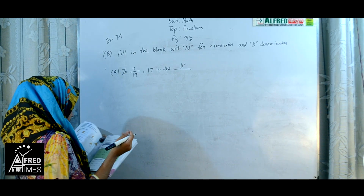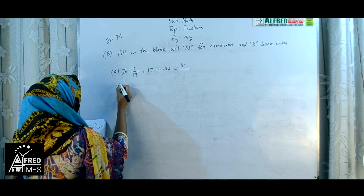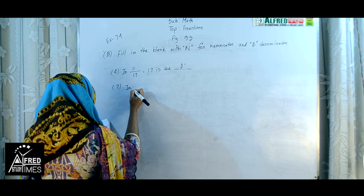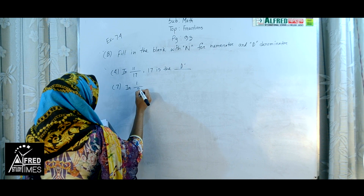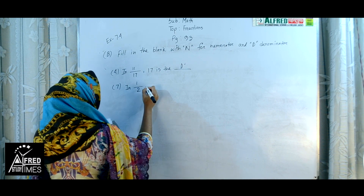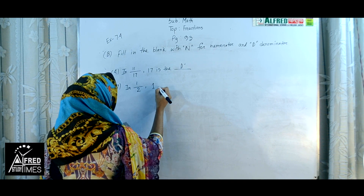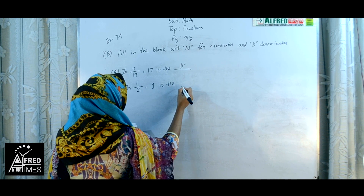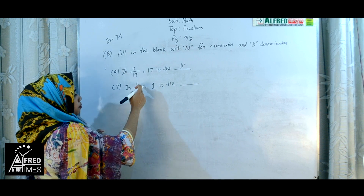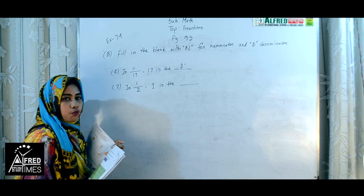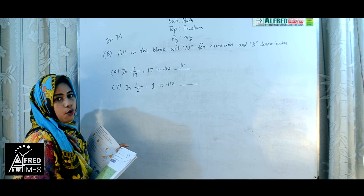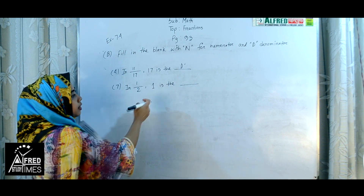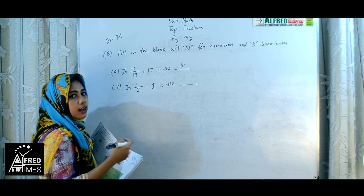Number 7: in 1 by 2, 1 is the upper part — 1 is the numerator. So we fill the blank with N for numerator.